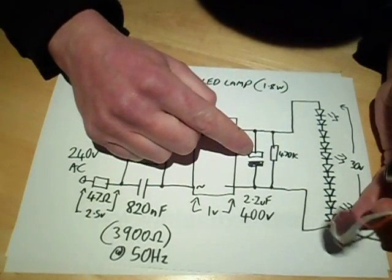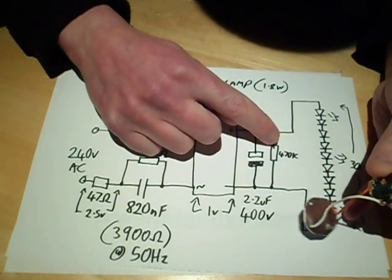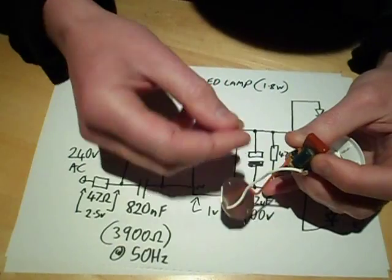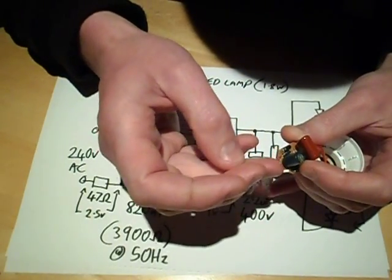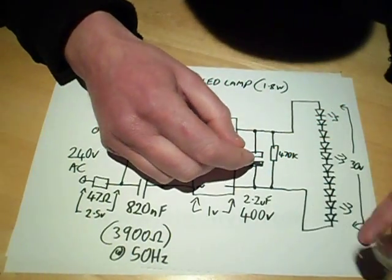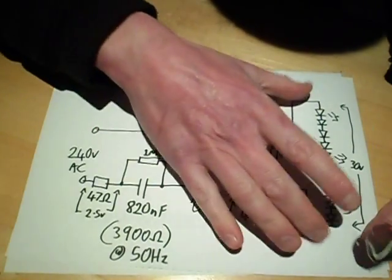It comes out to a smoothing capacitor with a 470K discharge resistor, a tiny little 470K discharge resistor. But that's directly across the LEDs.